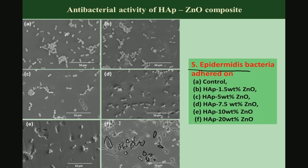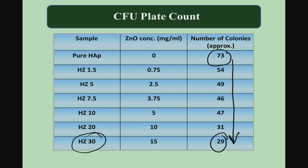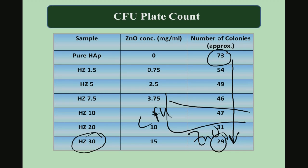At higher magnification, one or two bacteria can be seen with binary fission taking place, causing a furrow or cleavage in the bacterial morphology. The CFU plate count shows that pure hydroxyapatite has a colony count of 73, which is significantly reduced to about 29 to 30 when 30% zinc oxide is added. Plotting CFU versus zinc oxide content shows a systematic reduction in CFU count with increasing zinc oxide addition to hydroxyapatite.